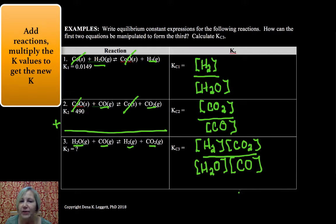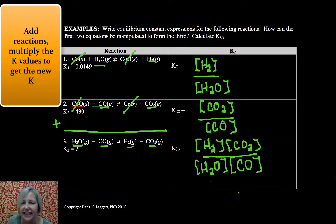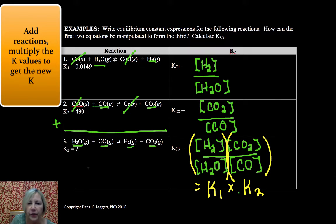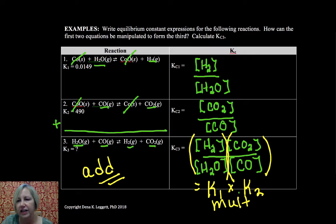Hopefully you can see that this is simply, we added reactions, and what happens is K1 times K2 was equal to K3. So this is K1 from up above, this is K2 from up above, and when we added reactions we multiplied their K values.